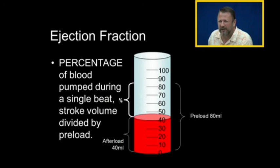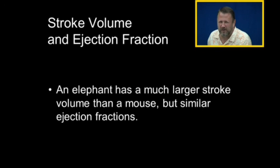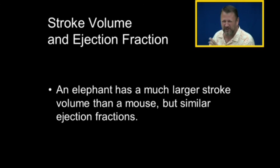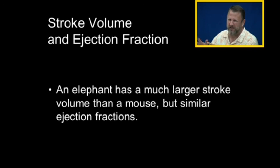That gives an ejection fraction of 50%, or 0.50. This is an important term in congestive heart failure. Interestingly, an elephant has a much larger stroke volume than a mouse, but they have the same ejection fraction — mammals basically share the same ejection fractions. That's why it's called normalizing: expressing it as a percentage rather than an actual volume.